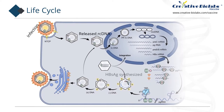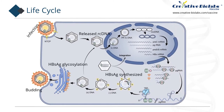HBV adheres to the surface of hepatocytes through low affinity receptors such as heparin sulfate and proteoglycan, and then mediates the endocytosis of the virus through the binding of the preS1 region of the large envelope protein to the virus receptor. Sodium taurocholate cotransporting peptide is an important receptor for mediating HBV entry into cells and establishing infection. The fusion of the virus envelope and cell membrane releases the capsid into the cytoplasm, which is then transported through the nuclear pore complex, and the viral genomic rcDNA is released into the nucleus.